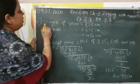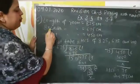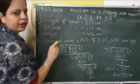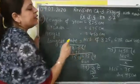Here students, see length of room is 825 cm, breadth of room is 675 cm and height of room is 450 cm.